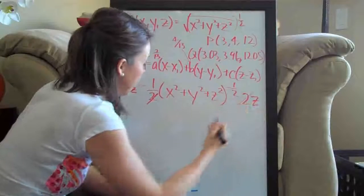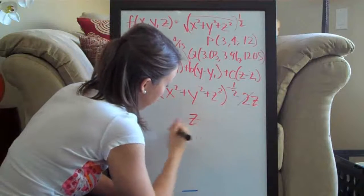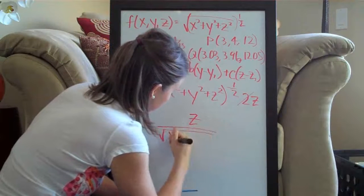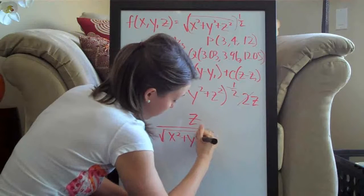The twos will cancel, and we'll be left with z over the square root of x squared plus y squared plus z squared.